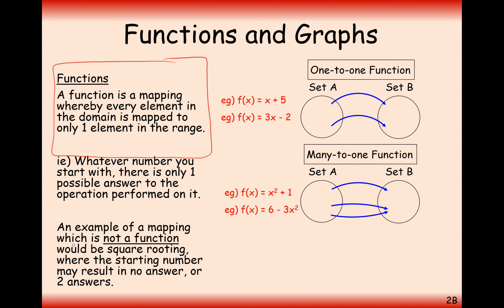An example of a mapping which is not a function would be the square rooting, where your answer may have either no answer or two answers. A mapping that is not a function may be a one-to-many mapping, where if you've got some element x, for example, it could be the positive square root of x or the negative square root of x. That may be an example of a mapping that's not actually classed as a function.